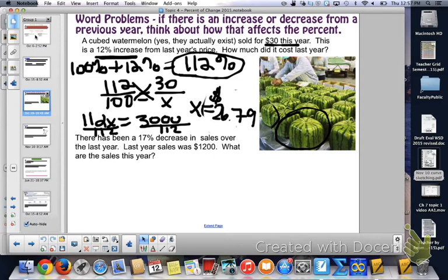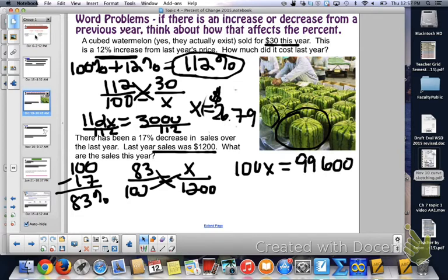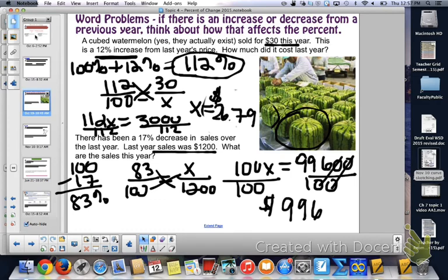The next problem: there has been a 17% decrease in sales over the last year. Last year's sales was $1,200. A 17% decrease means 100 minus 17, which is 83%. So we're finding 83% of last year's sales. 83% of $1,200 is this year's sales. Cross-multiply: 100 times x equals 83 times 1,200, which is 99,600. Divide by 100 to get $996 for this year's sales.